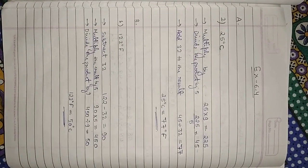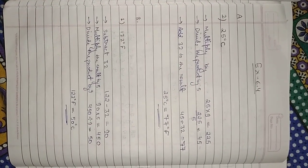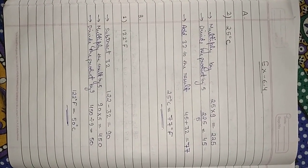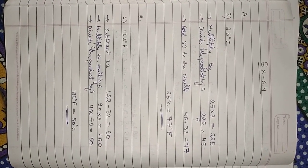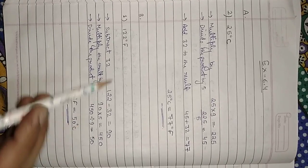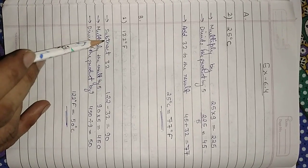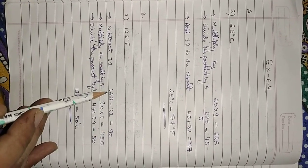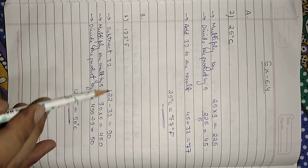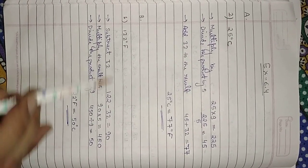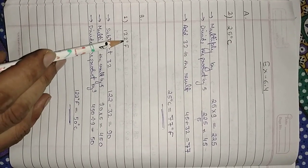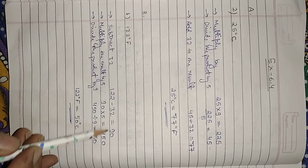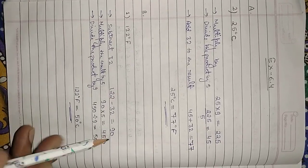Part B: how to convert degree Fahrenheit to degree Celsius. First step: subtract 32 from the given degree Fahrenheit. So 122 minus 32 equals 90.